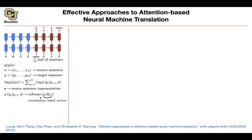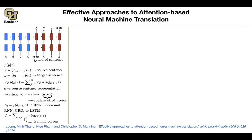Then you do a softmax, which gives you the probability of the next word. You model H using a recurrent neural network — it could be a simple RNN, a GRU, or an LSTM. In the end, you have a corpus of input-output translations, and you maximize the likelihood, or equivalently minimize the negative log likelihood.